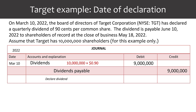Now that we've gone through the dates for a cash dividend, let's go through the accounting and journal entries associated with each of those dates. Using the same Target dividend announcement, we look at the date of declaration on March 10. On this date, the company will debit dividends for $9 million, which is the 10 million shares times the dividend amount of $0.90. The credit will be to a liability called dividends payable for that same $9 million.